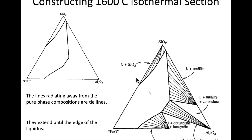In each of these regions, you'll see radiating lines — that means it's a two-phase region, liquid plus SiO₂. We're drawing these lines from the composition of the solid to the composition of the liquid, where this curve is the composition of the liquid. These lines that radiate out are basically tie lines, just like in binary phase diagrams. That's how we represent a two-phase field.